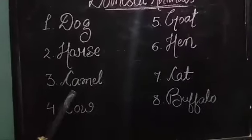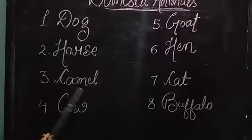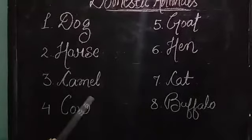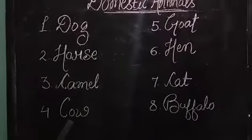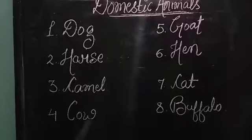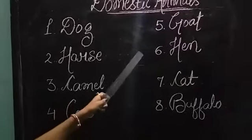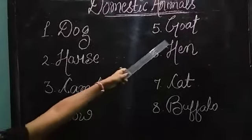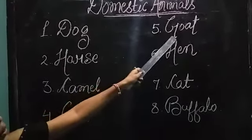Third, camel — C-A-M-U — camel. Four, cow — C-O-W — cow. Fifth, goat — G-U-A-T — goat.